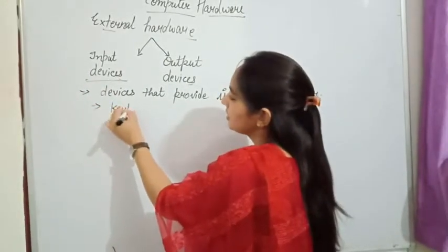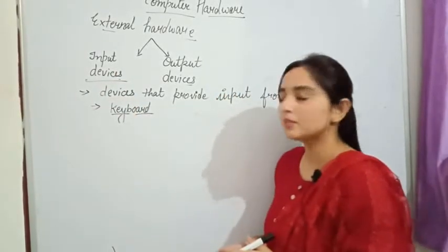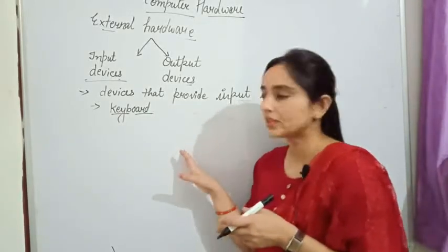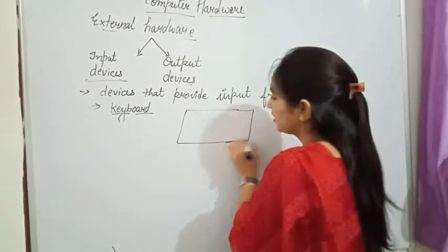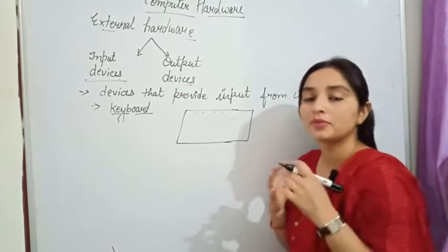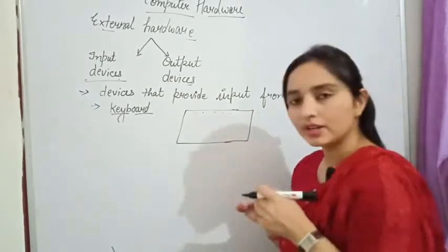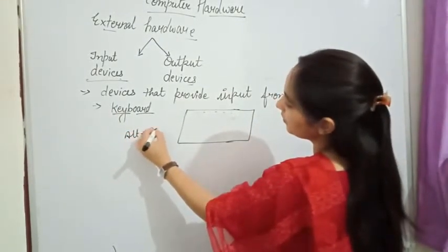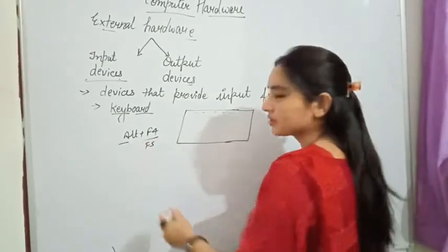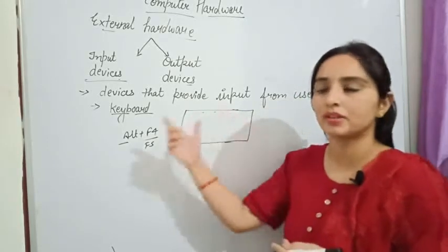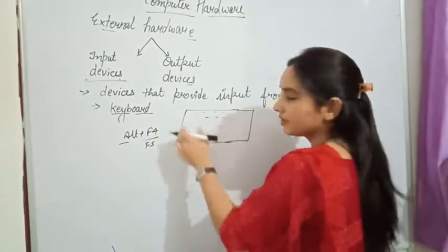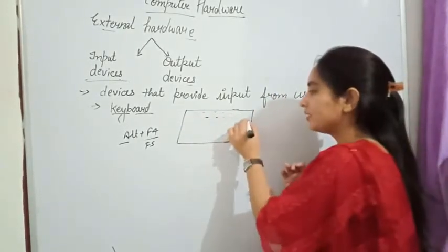The first input device is the keyboard. A keyboard is a rectangular hardware device that is made up of various keys. We have numerous keys — on the top we have function keys, which perform various functions. For example, Alt+F4 closes the current open window, and F5 is used to refresh. We have F1 to F12, giving us 12 function keys. We also have symbol keys, alphanumeric keys, modifier keys, and a number pad.